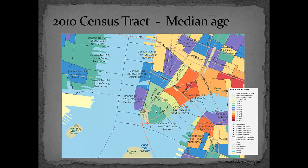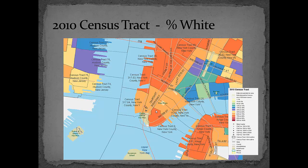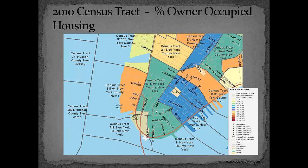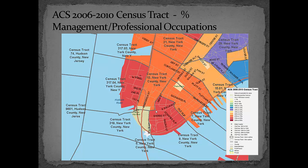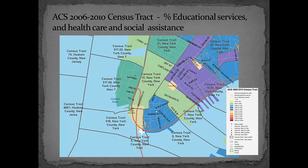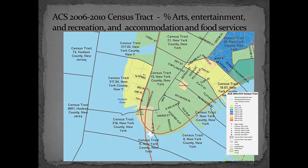Most of the residents are young, and ethnically the area is largely white, with a significant number of Asians. Most of the residents are renters rather than owners, and most are occupied in management or professional occupations — a surprisingly low level of representation of finance and insurance professionals. A surprisingly high level of representation of people working in educational services, health care, and social assistance. And of course, as Molenkopf has noted, along with Florida, the creative class.